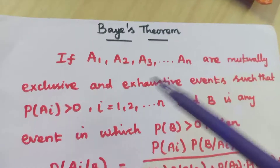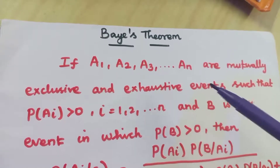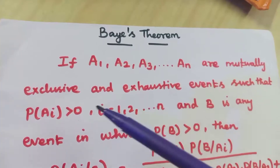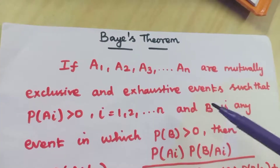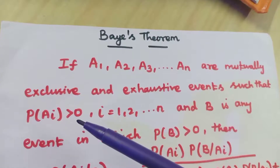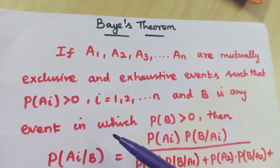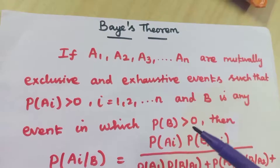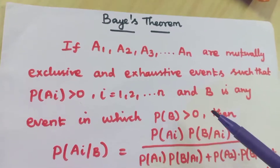Now, Bayes theorem: if A1, A2, A3, etc., An are mutually exclusive and exhaustive events such that all probabilities are greater than 0, and B is any event in which the probability of B is greater than 0, that is the probability also greater than 0.